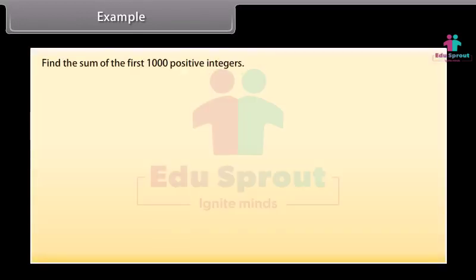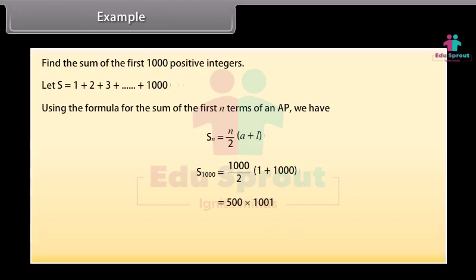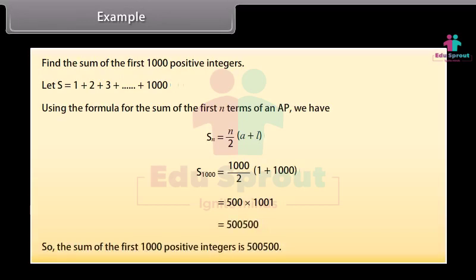Find the sum of the first 1000 positive integers. Let S equal to 1 plus 2 plus 3 plus so on plus 1000. Using the formula for the sum of the first N terms of an AP, we have SN equal to N upon 2 into (A plus L). Substituting the values, S1000 is equal to 1000 upon 2 into (1 plus 1000), which is equal to 500 into 1001, which becomes 500500. So the sum of the first 1000 positive integers is 500500.